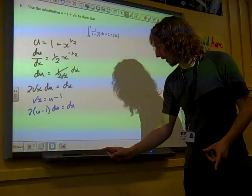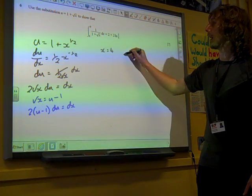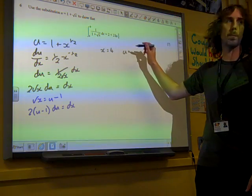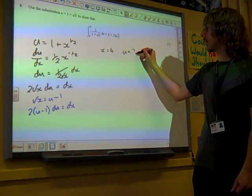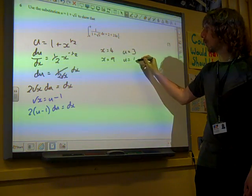But I think we're about ready to do the substitutions. One more thing we ought to do, and that is alter the limits. If x equals 4, then u equals 1 plus root 4, which would be 3. If x equals 9, then u equals 1 plus root 9, which would be 4.